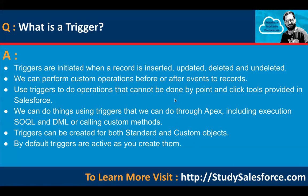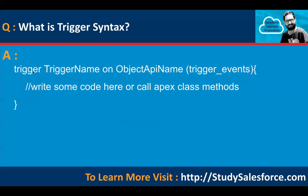Next question: what is the syntax of a trigger? You use the keyword 'trigger', then the name of the trigger, then 'on', then the object API name, then trigger events. For example, if creating a trigger on the Account object, the trigger name would be 'AccountTrigger', and after 'on' you write 'Account'. For a custom object, the API name should contain double underscores and 'c'. Inside brackets you put the events, and inside braces you write the code or call Apex methods. Visit studysalesforce.com for separate videos on trigger concepts and scenarios.